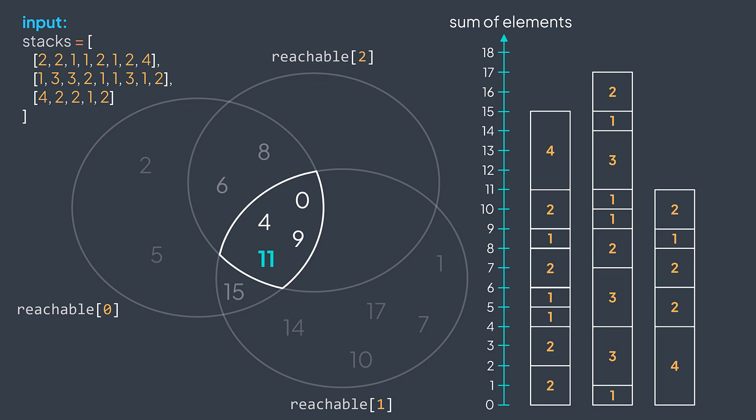Even though the problem talks about popping elements and stuff, we don't need to really pop elements. We just need the possible sums, which we can find by using the cumulative sum by starting from the bottom.